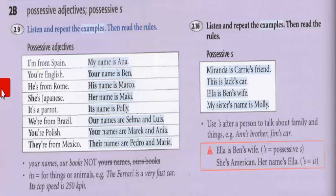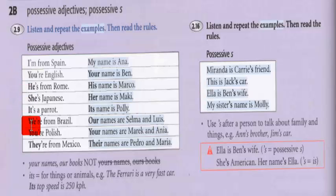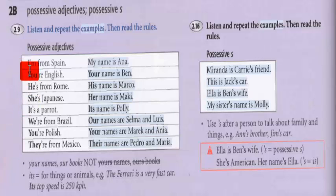Quais são os personal pronouns? Eles estão aqui no cantinho. É o I, you, he, she, it, we, you, and they. Esses são — they are — the personal pronouns. Essa list here é a list dos personal pronouns, que estão aí in bold — in negrito. Estão in bold.